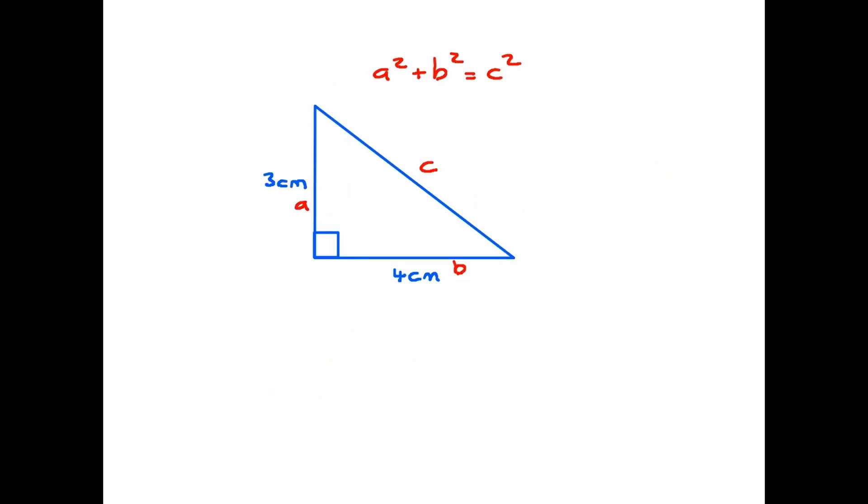This example is exactly like the previous one, just helping us to get used to the rule. Don't forget, A squared plus B squared equals C squared. So the first thing we do is take A, which is 3 centimeters, so that's 3 squared, plus we then take B, which is 4 centimeters, so that's 4 squared equals C squared, and that's what we're looking for, the length of C. So 3 squared equals 9, 3 times 3 is 9, and 4 squared, 4 times 4 is 16, and that is going to equal C squared.